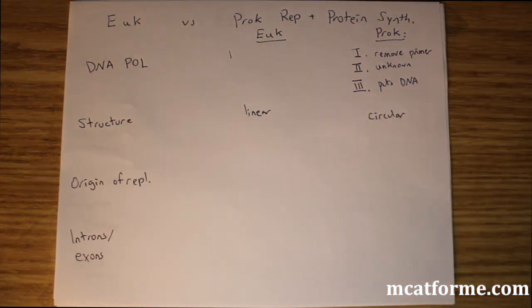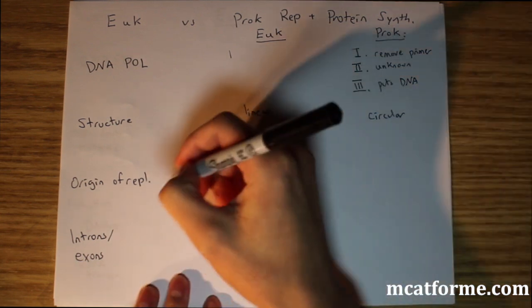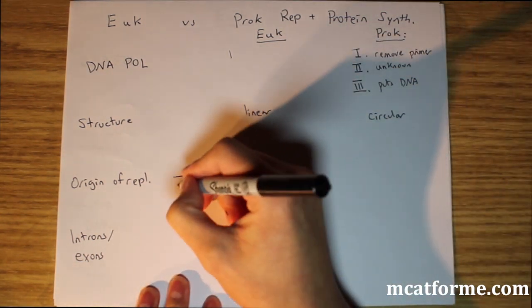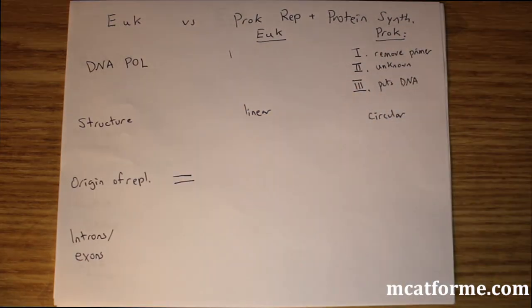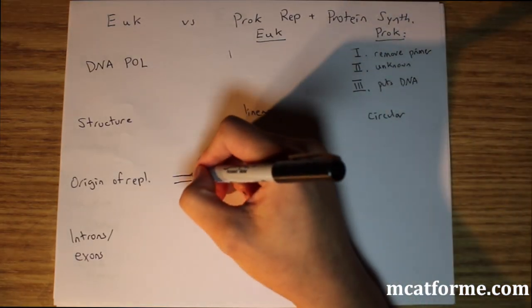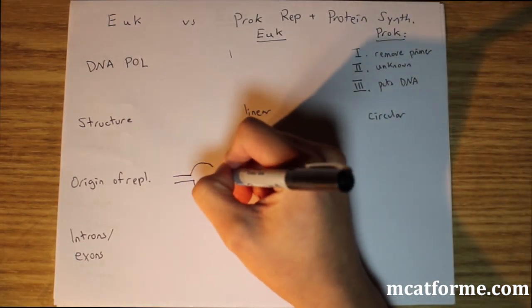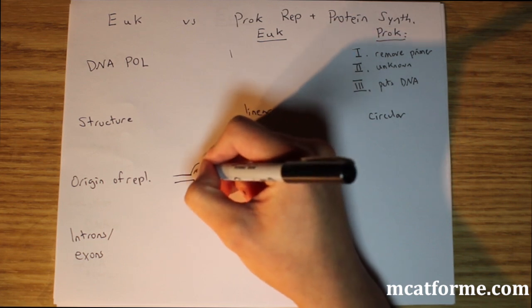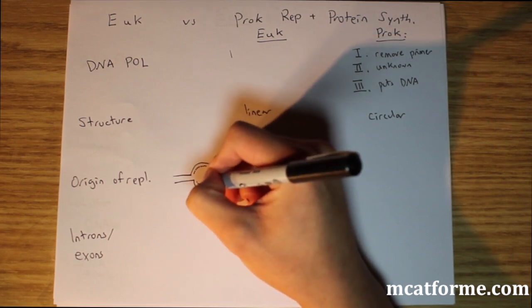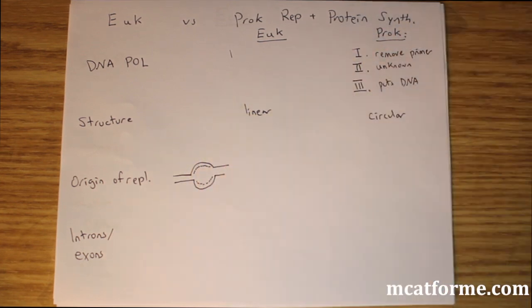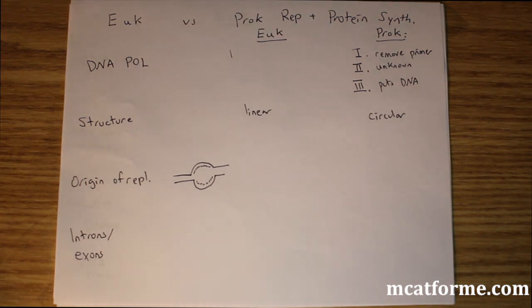Next is origin of replication. Imagine this being the two parent strands of DNA. When they're getting replicated, we have this replication bubble. This is when we start laying down the next daughter set of DNA. These are called origins of replication, where replication starts.